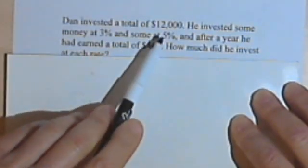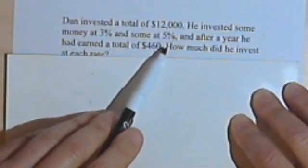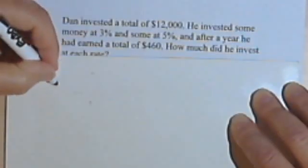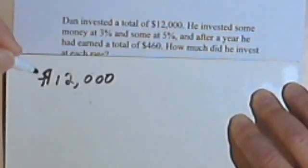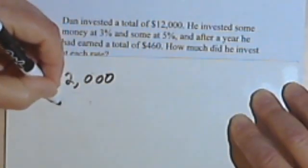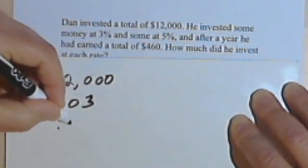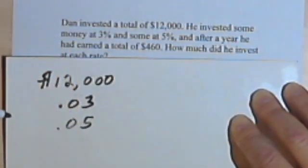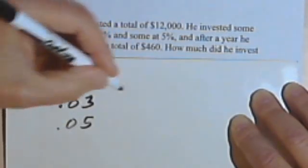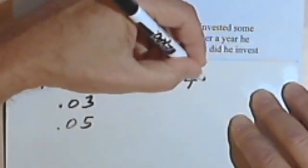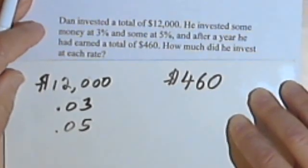Let's look at the next one. Dan invested a total of $12,000. He invested some money at 3% and some at 5%. Let's write down these facts. There were $12,000 and there was 3%, let's write that as a decimal, 0.03. And there was also 5%, 0.05. And he earned a total, in other words, his interest for both the investments was $460.